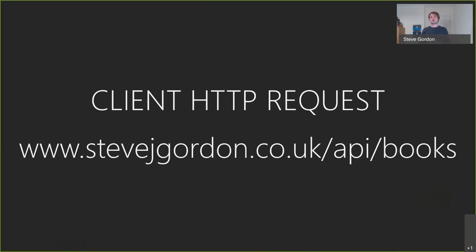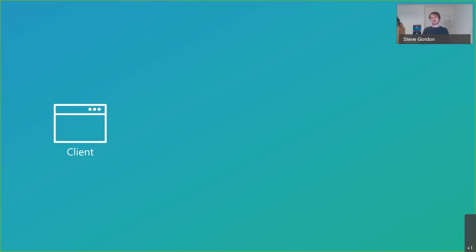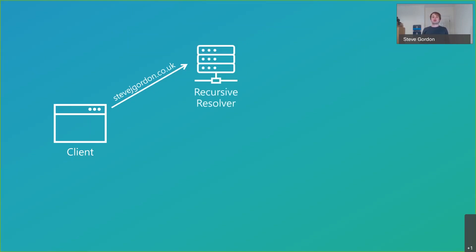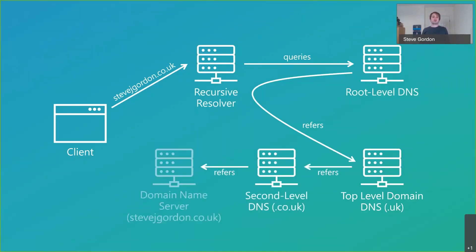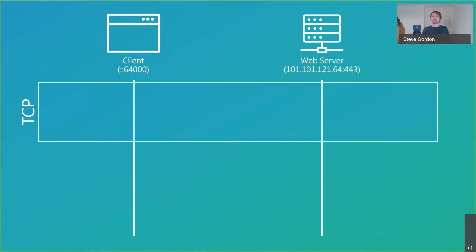We're going to begin right from the very start of this journey where a client wants to make an HTTP request. Let's imagine we've got an API running on stevejgordon.co.uk/api/books and the client wants to get some data from it. The first phase is that the client has an address for a server and needs to understand where that server actually is. There's a set of lookups and referrals through various levels of the domain name system until we get back an IP address.